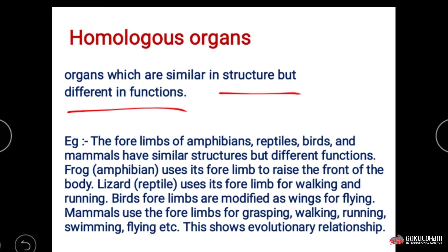For example, the four limbs of amphibians, reptiles, birds, and mammals. In amphibians they use four limbs to raise the front body; in lizards they use four limbs for walking and running; birds use them for flying; and mammals use them for grasping, running, swimming, and flying. This shows the evolutionary relationship — they are adapted for particular environments but developed from the same organs with similar structure.